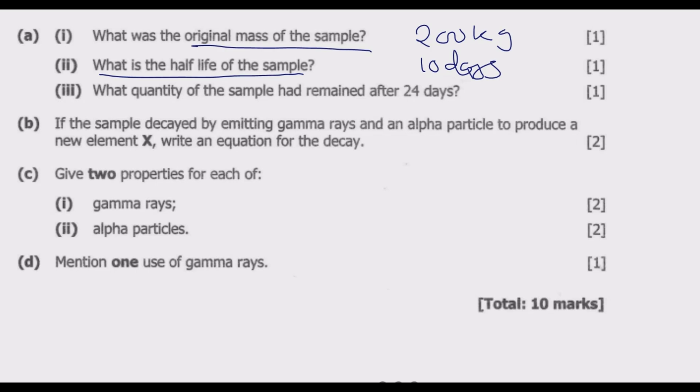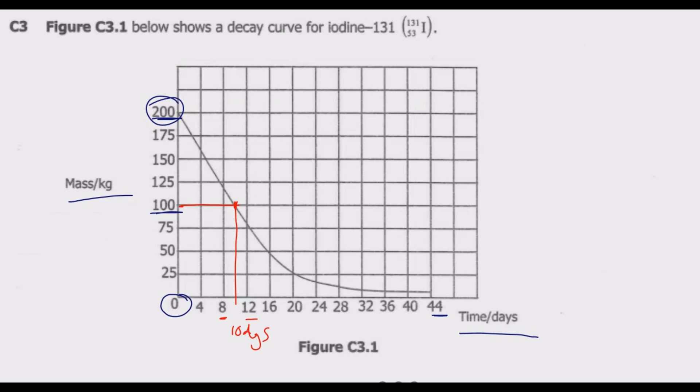Roman numeral 3 of A: What quantity of the sample had remained after 24 days? We're going to go on the graph and look for day 24. Day 24 is here and the value is somewhere here. That value is not at the middle, it's not half.